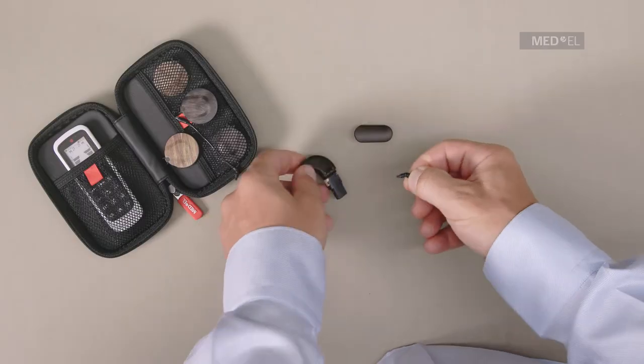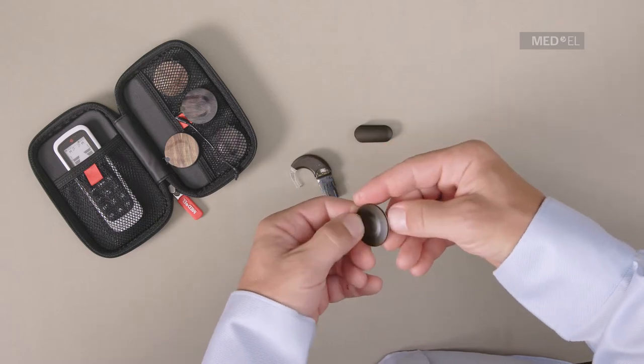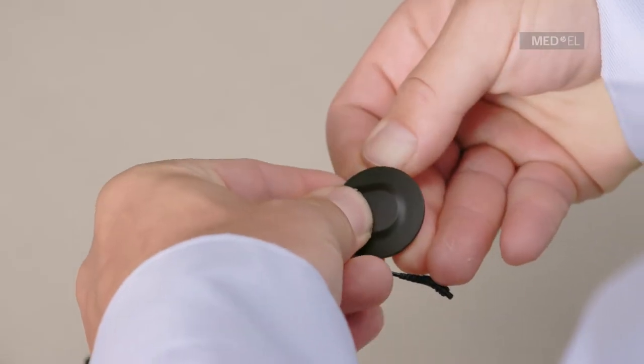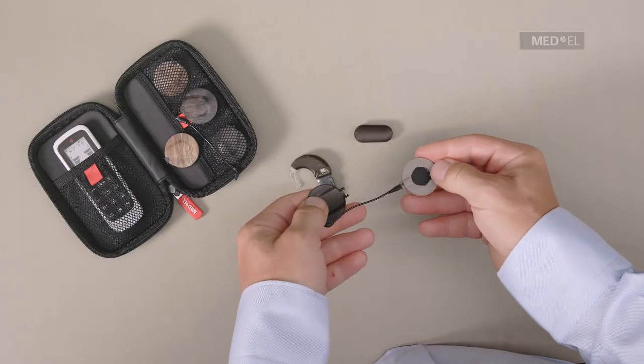To detach the cable from the coil, first remove the coil cover. Insert your fingernail into the small groove between the coil cover and base and slide around the base to gently detach it.